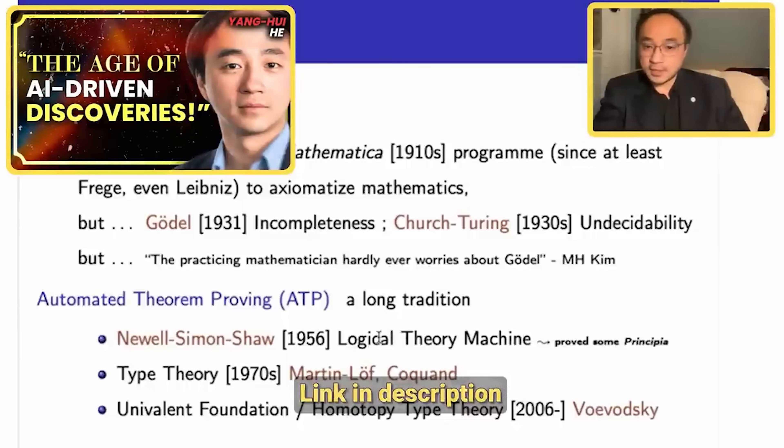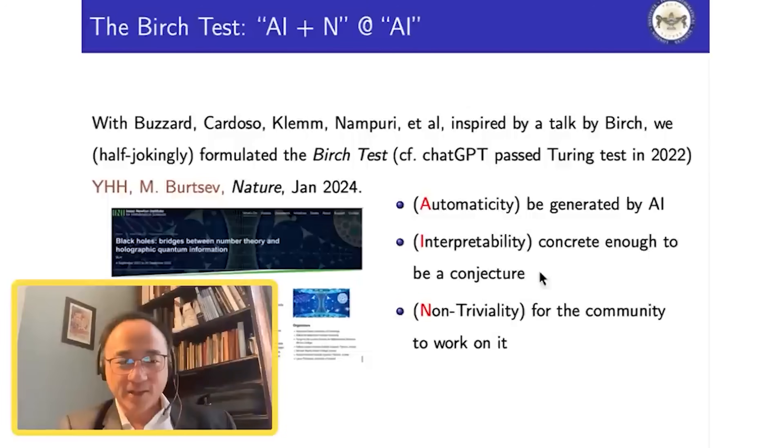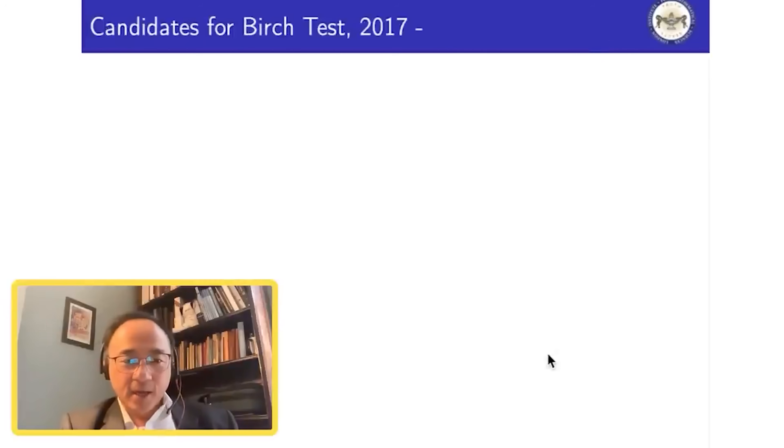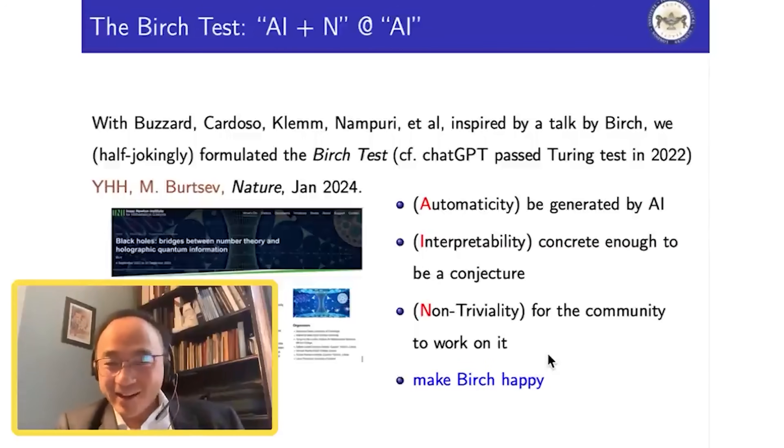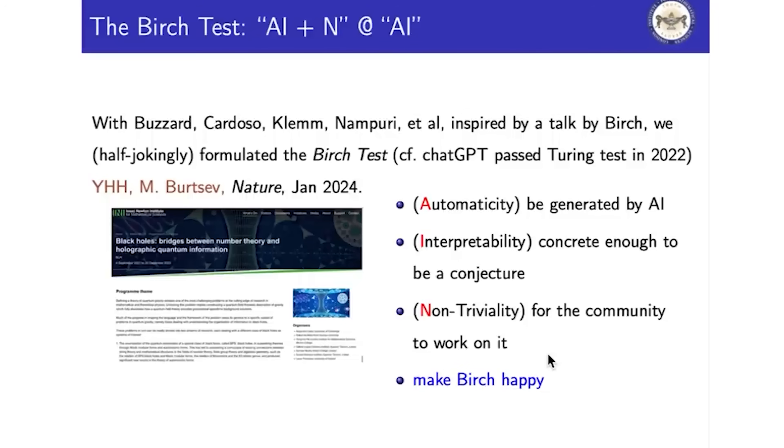We'll put a link on screen for the last conversation in case you're just tuning in. I believe we talked about the Birch test, bottom-up, top-down, metamathematics, classifications of Calabi-Yau manifolds, and database construction. So this is AI plus N for the Birch test. I guess I'm very good at digressing — sometimes I digress so much that I don't even remember what I was digressing on anymore. But as you mentioned, in speaking about shower thoughts or the margins, the digressions are sometimes more meaty than the meat.